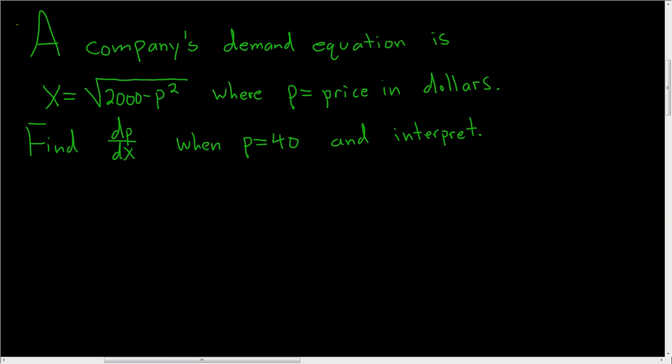A company's demand equation is given by x equals the square root of 2000 minus p squared, where p is the price in dollars. We want to find dp/dx when p equals 40 and interpret our solution.